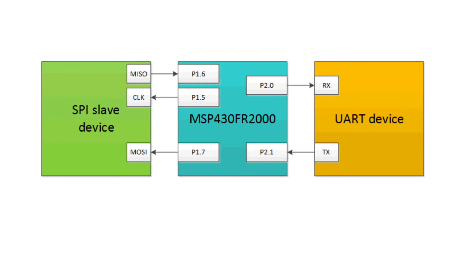The system can be easily modified to support additional bytes of data, higher data rates, or full duplex communication by choosing one of the higher-memory MSP430 value line sensing MCUs.